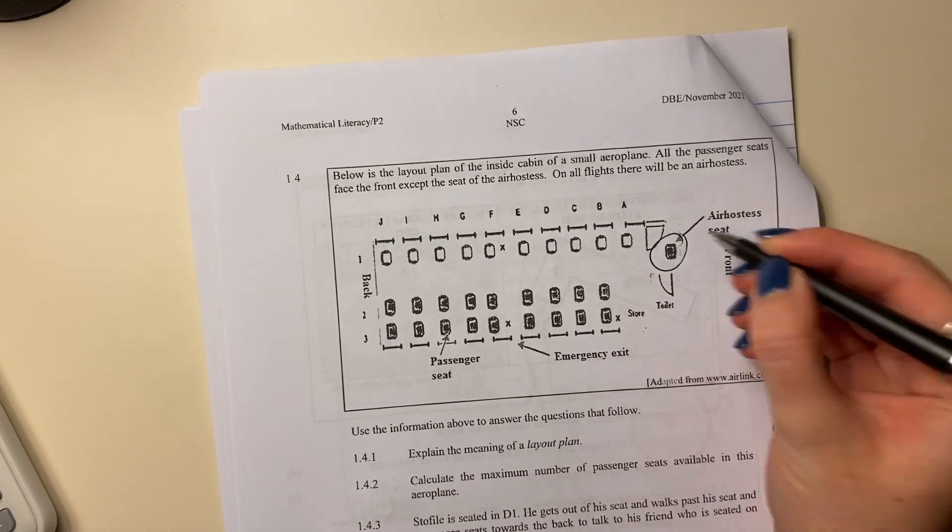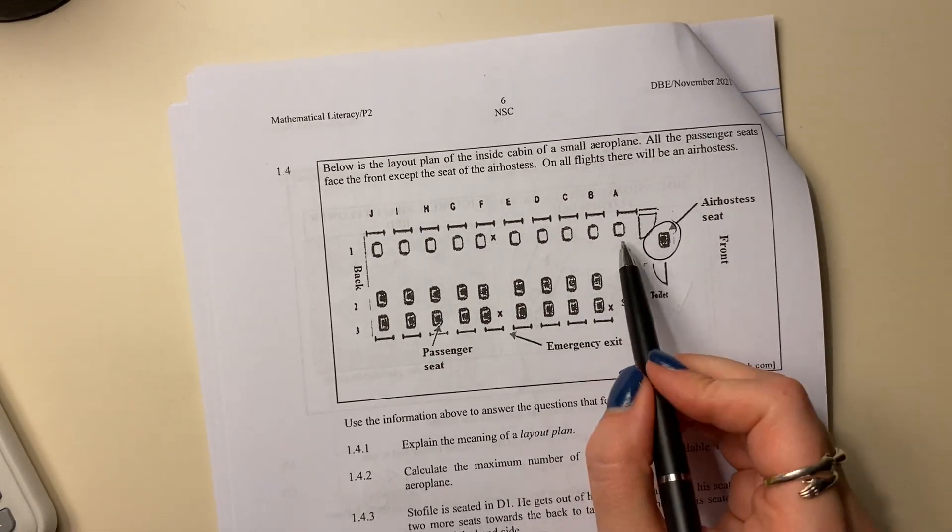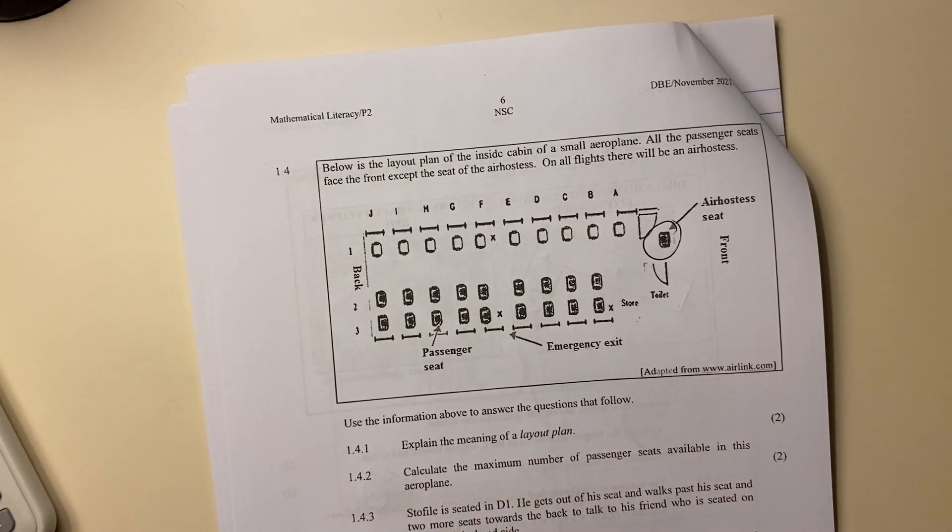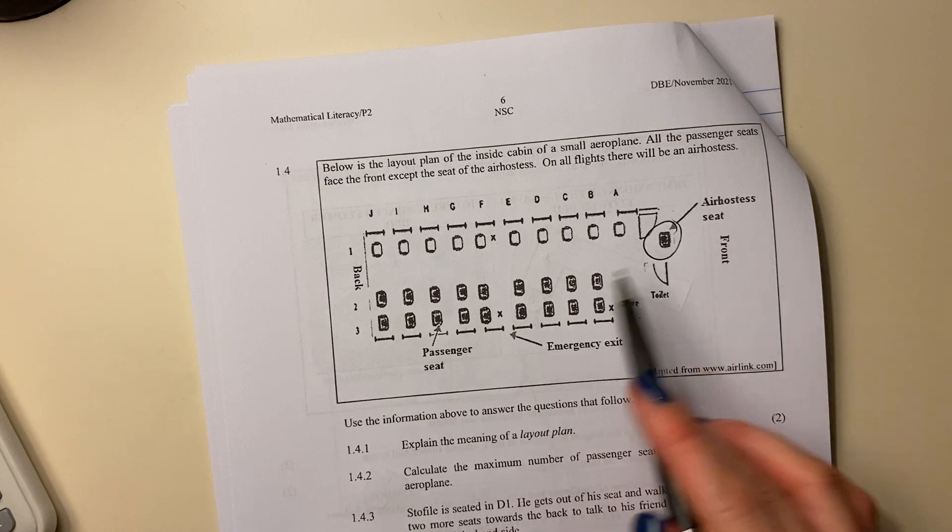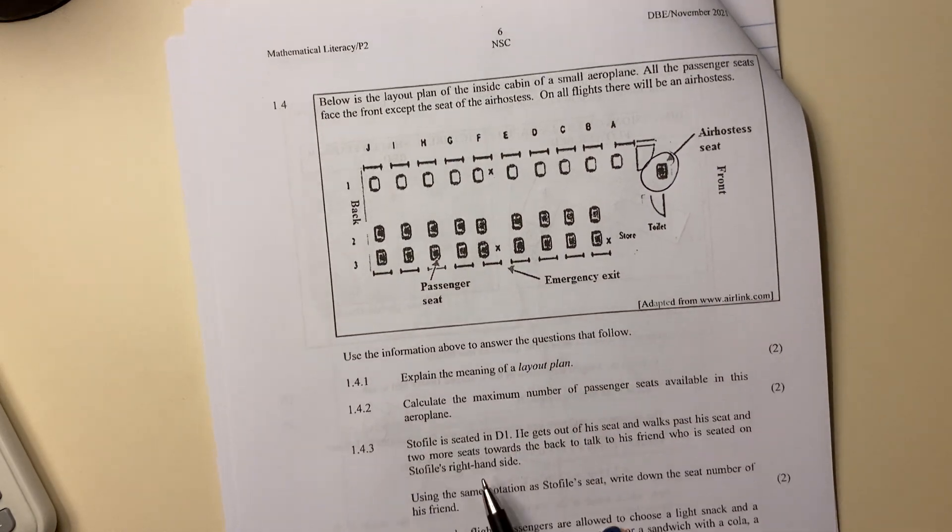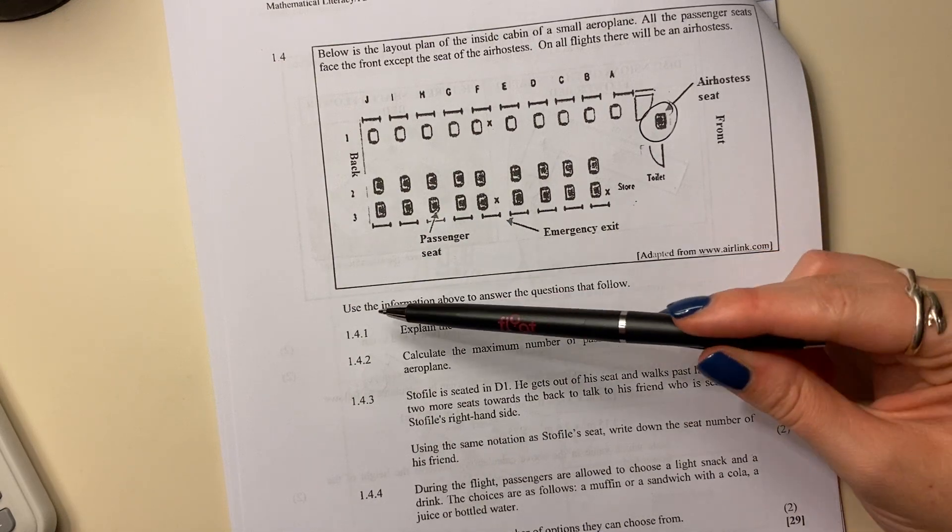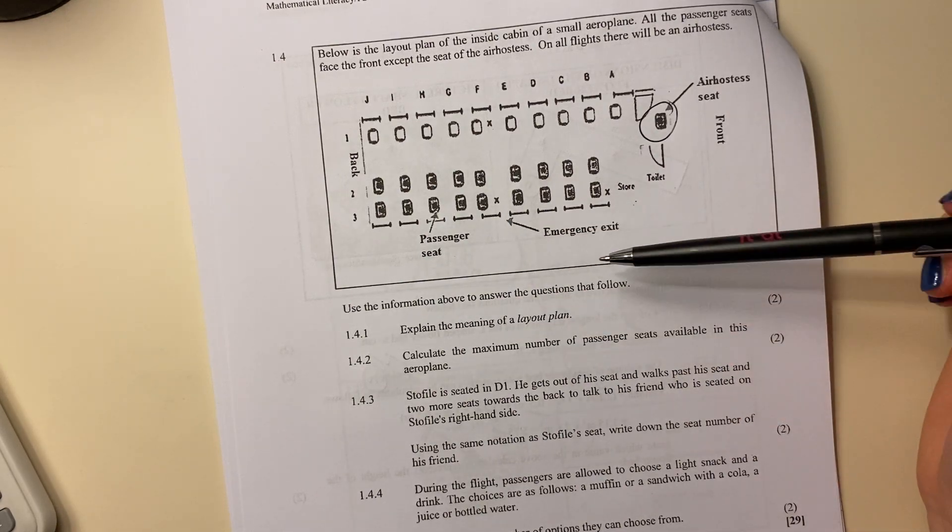They told us that's where the air hostess sits, and then here is where all the people sit, either in these ones or those ones over there. There's an emergency exit. My English is gone today. Let's look at the questions. Use the information above to answer the questions that follow.